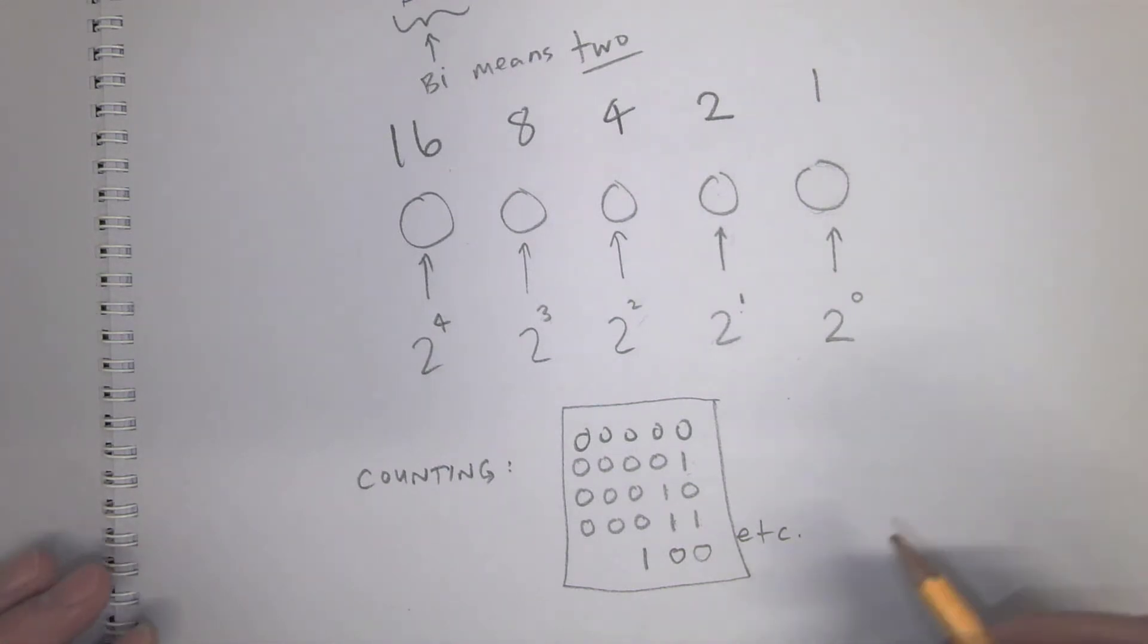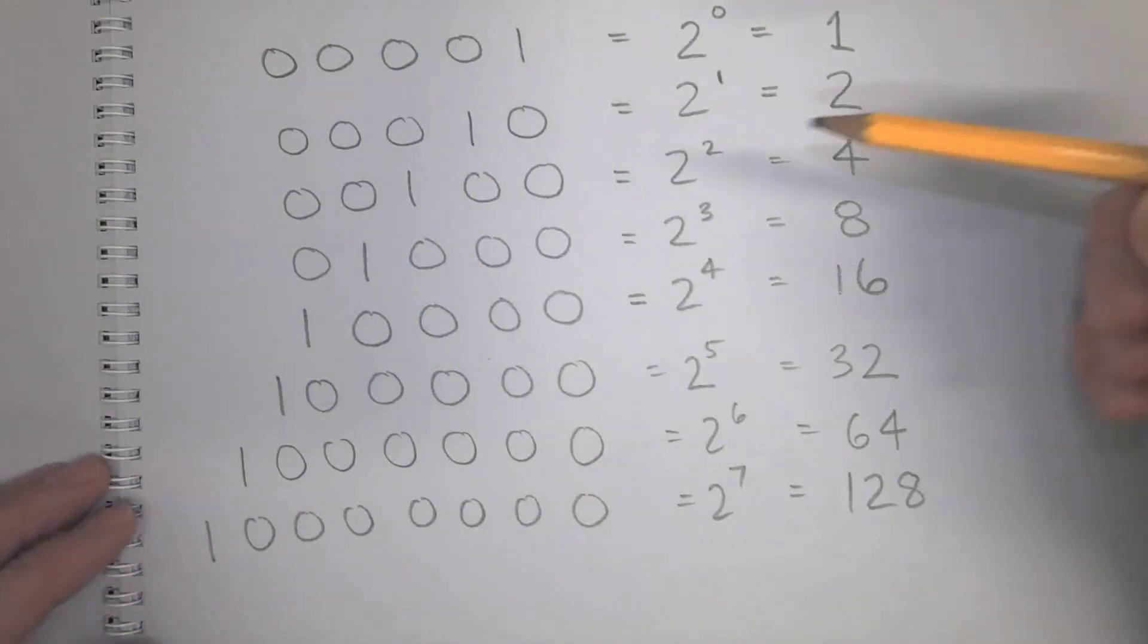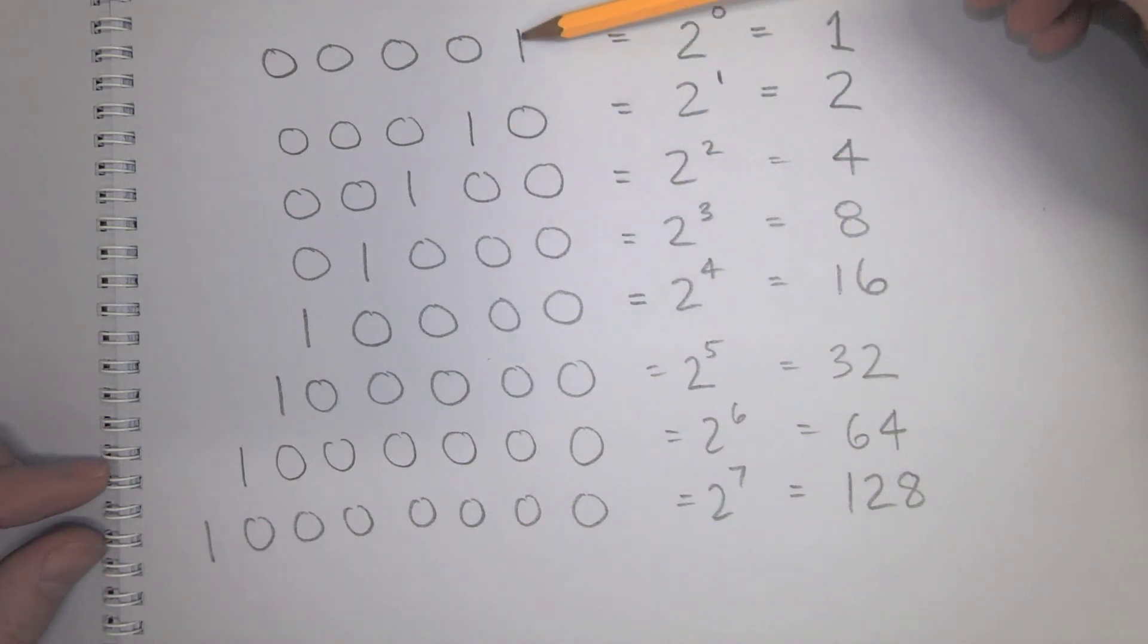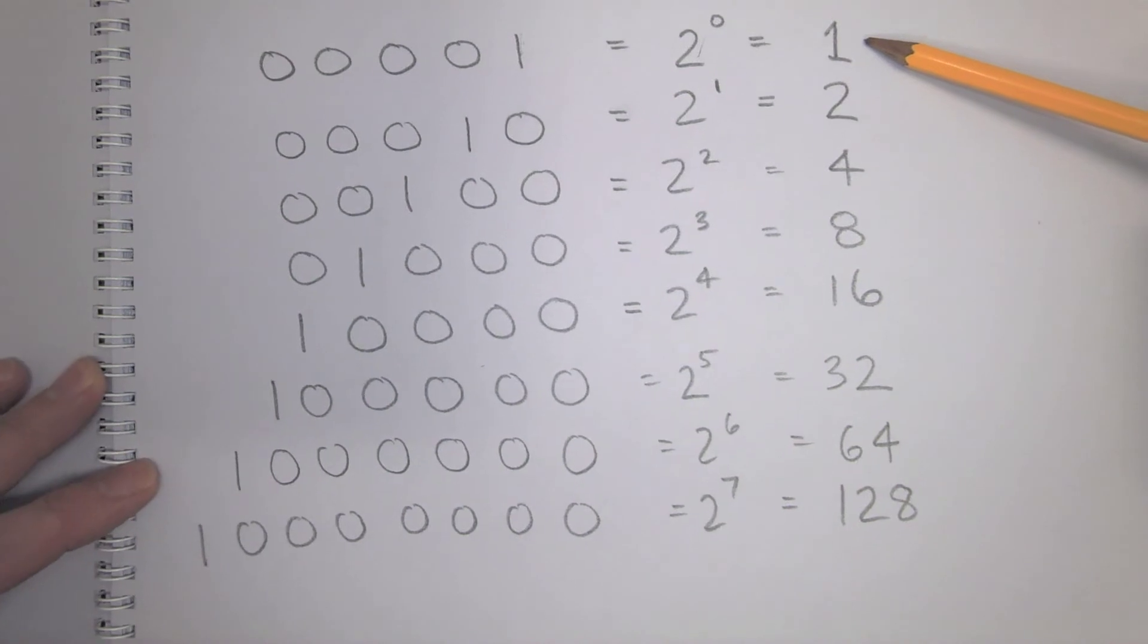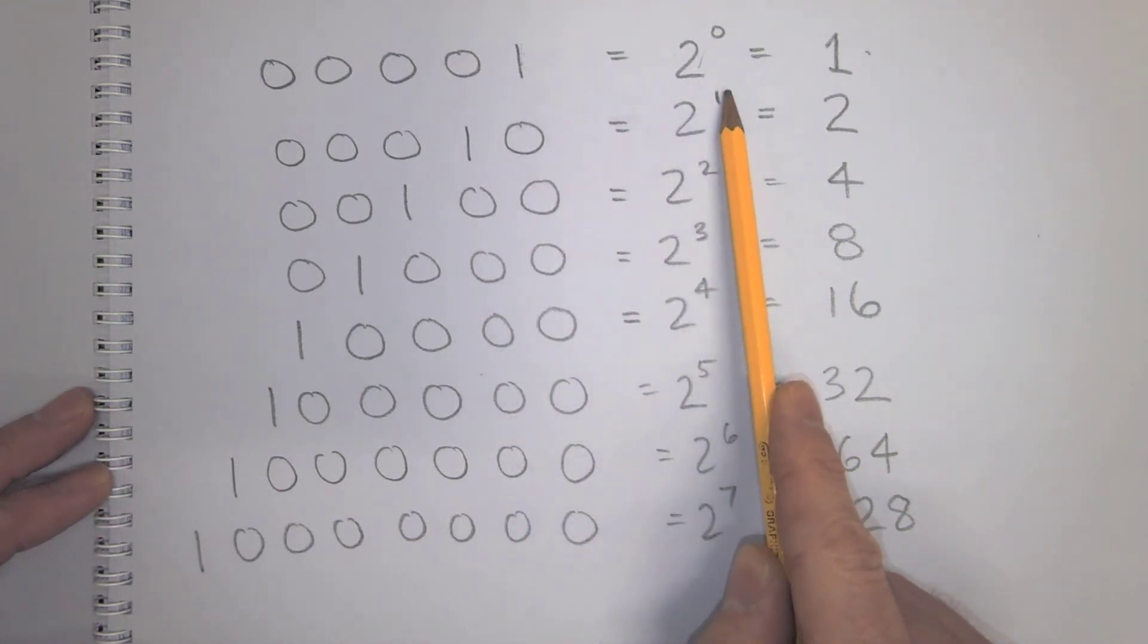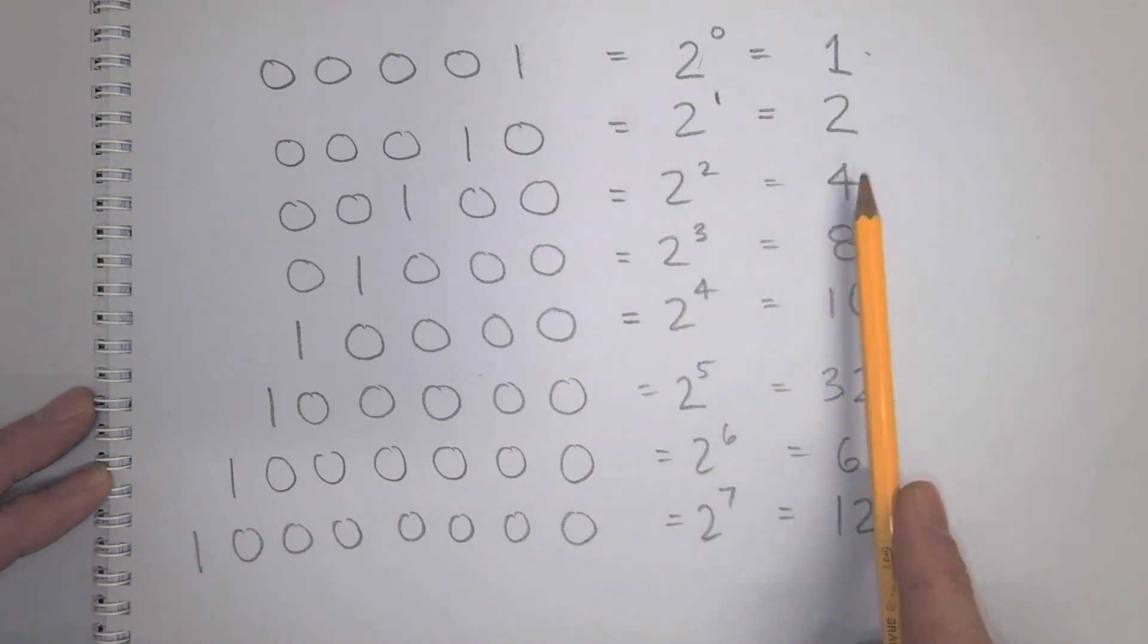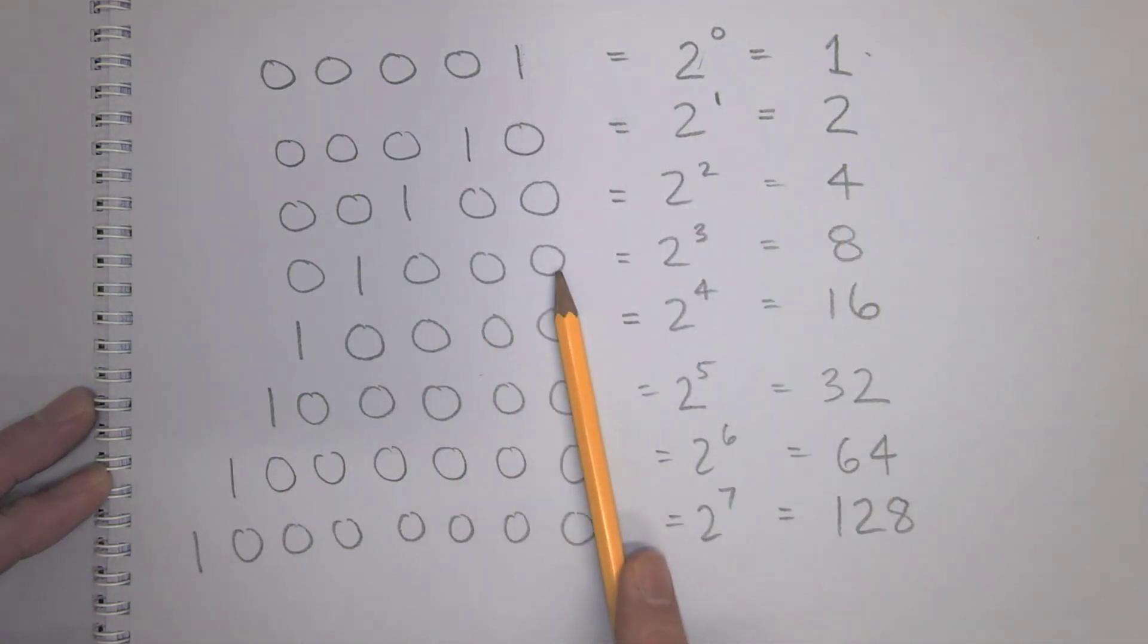So that means if you had just a 1 in this position, it's going to be 2 to the power of 0, and that number is 1. And then if you had a 1 in just this position, that's going to be 2 to the power of 1, that's going to be 2. This number is 2 to the power of 2, which is 4. This number is 8, this number is 16, this number is 32.